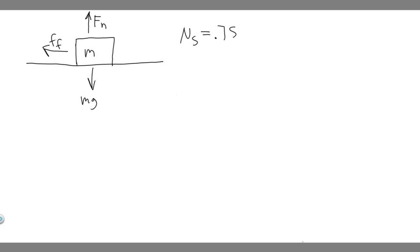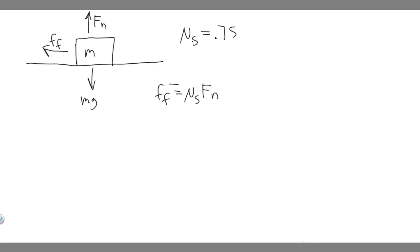We're going to be solving using the formula: the force of friction equals mu sub s times f sub n. We'll plug in mu sub s, solve for f sub n, and solve for the force of friction. Then we'll get an acceleration variable. We do this by finding the sum of the forces in each direction — the sum of forces in the y direction and the sum of forces in the x direction.